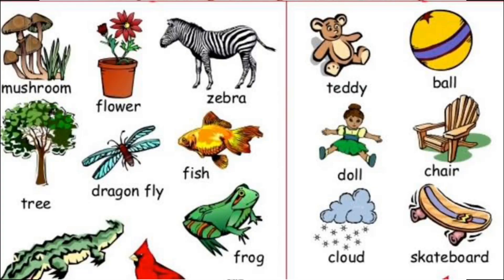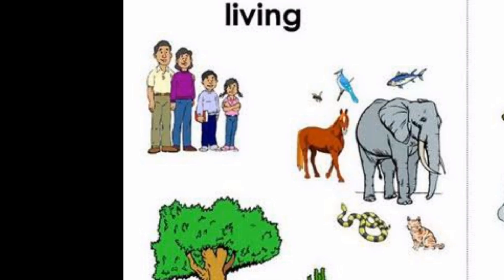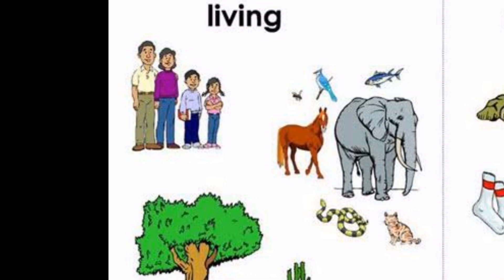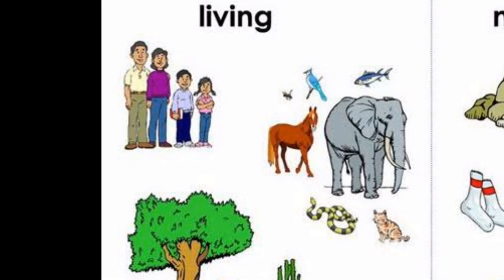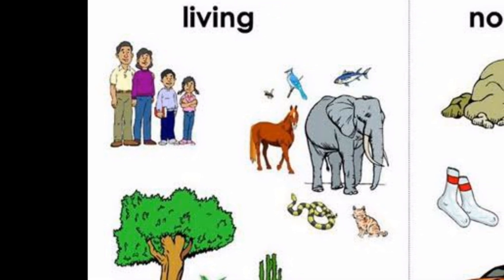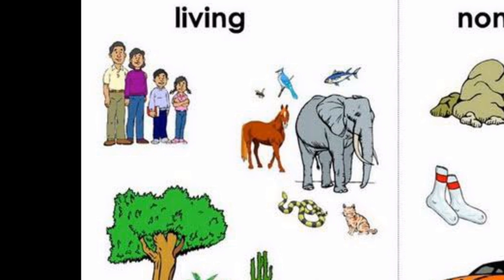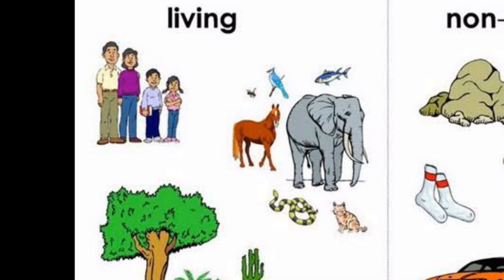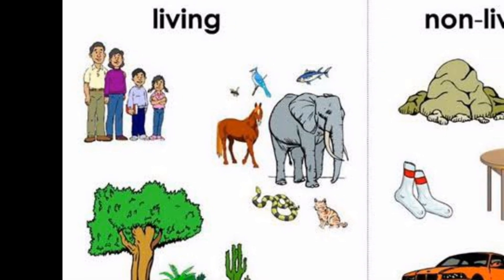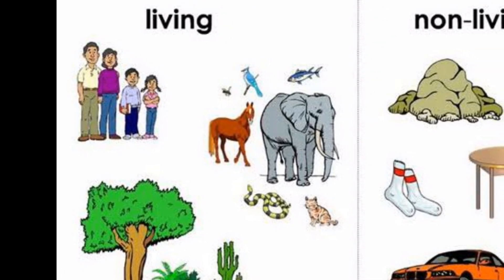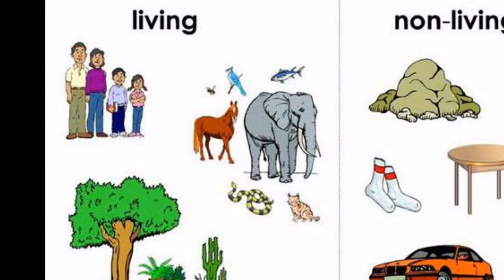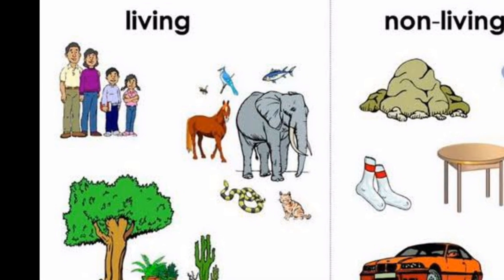Can you see a number of pictures? Now you can identify which is leaving and non-leaving. So we can easily see from the picture that the tree, children, animals, birds, insects all belong to leaving things, whereas the others belong to non-leaving things.